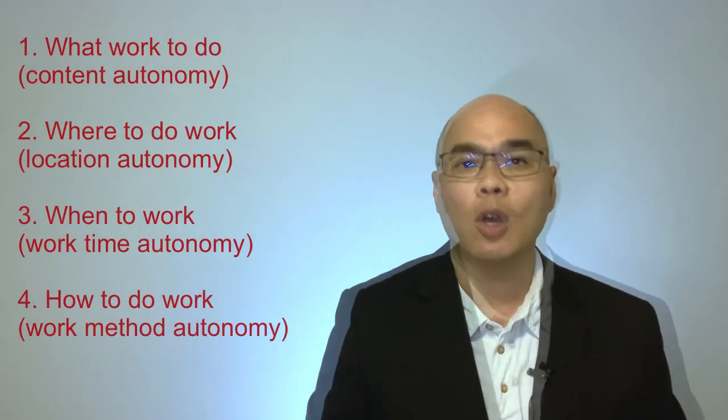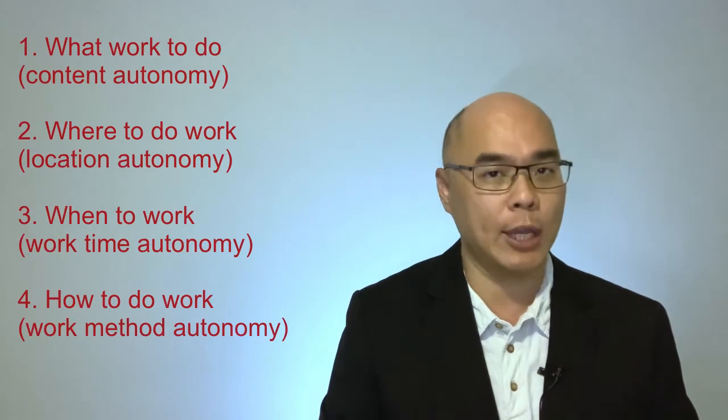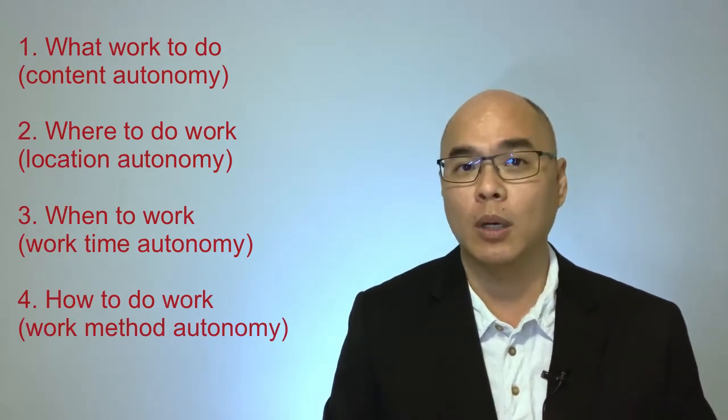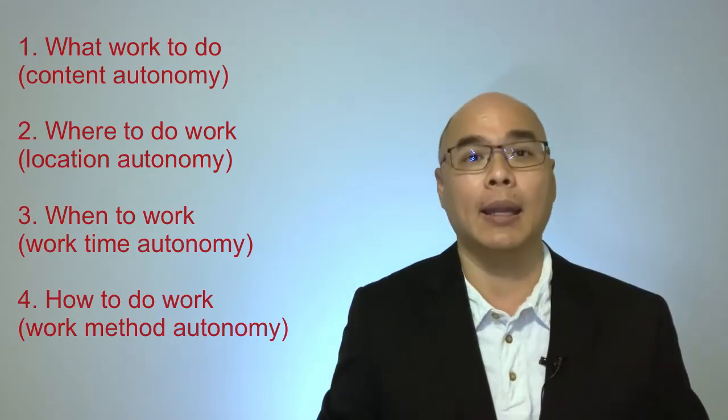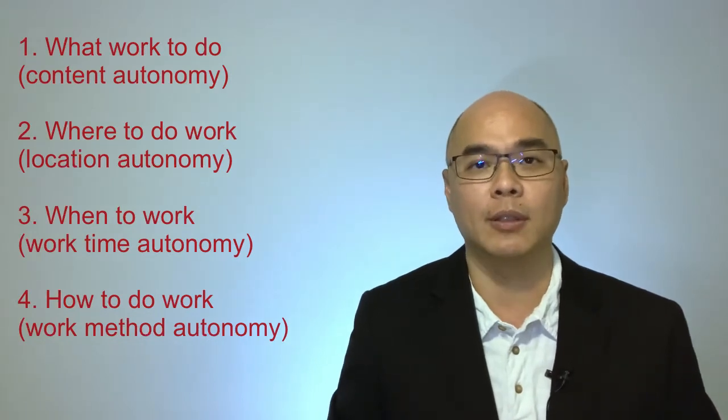The key to understanding work autonomy is to understand the four different aspects of work. That is, what work to do—that is content autonomy; where to do the work—the location autonomy; when to work—or the work time autonomy; and how to do work—the work method autonomy.